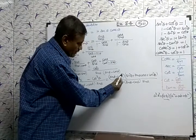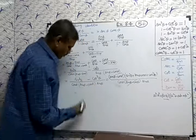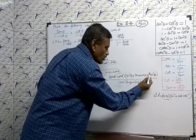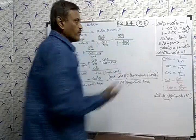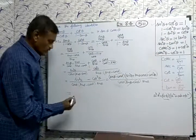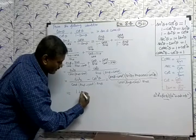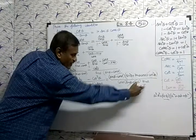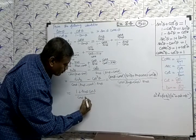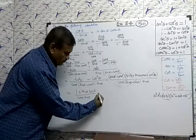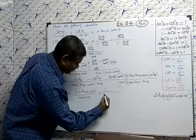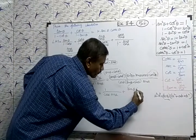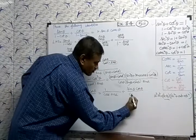We can cancel the (sine theta minus cos theta) from numerator and denominator. Remaining: sine square theta plus sine theta cos theta plus cos square theta. Sine square plus cos square equals 1 by the Pythagorean identity, so this becomes 1 plus sine theta cos theta. Now separating the fraction: 1 divided by (cos theta into sine theta), giving 1 by cos theta and 1 by sine theta separately.